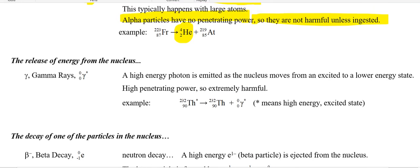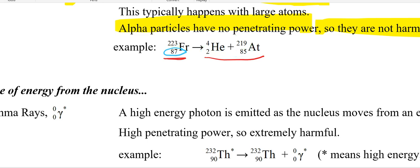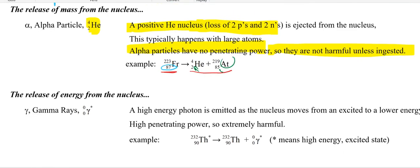Looking at our example: if you have francium and it emits by alpha particle decay, the total atomic number on the left is 87. On the right, 2 plus 85 makes 87. For the atomic mass, 223: 4 plus 219 is 223. So the atomic mass is conserved and the atomic number is conserved — the same on both sides. The way you figure out what's missing is you write atomic numbers first, and the atomic number tells you what symbol to write.